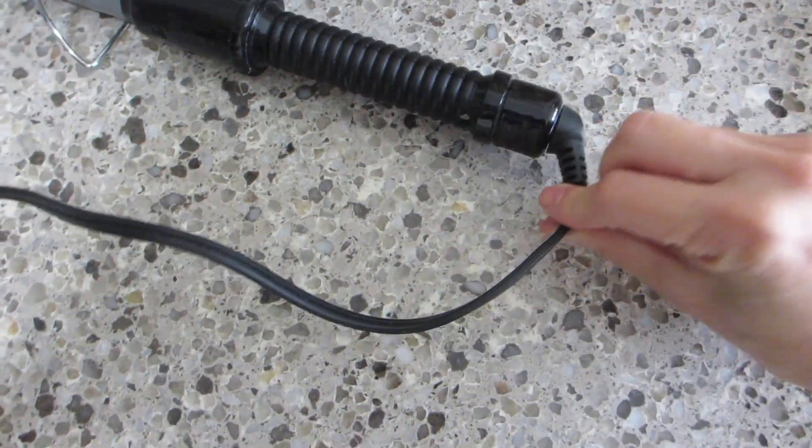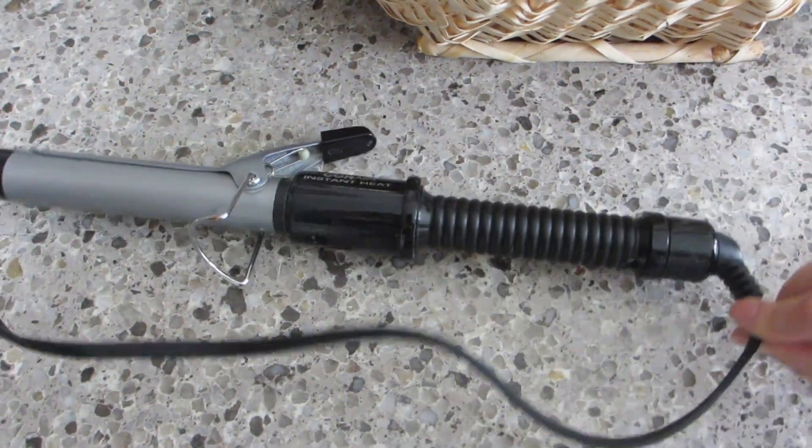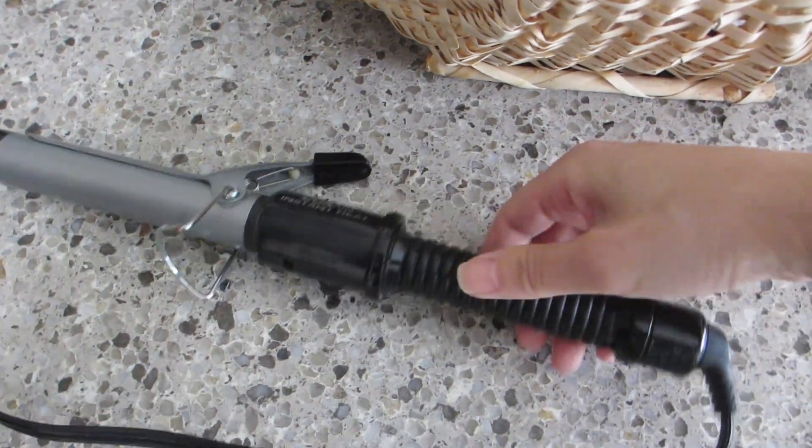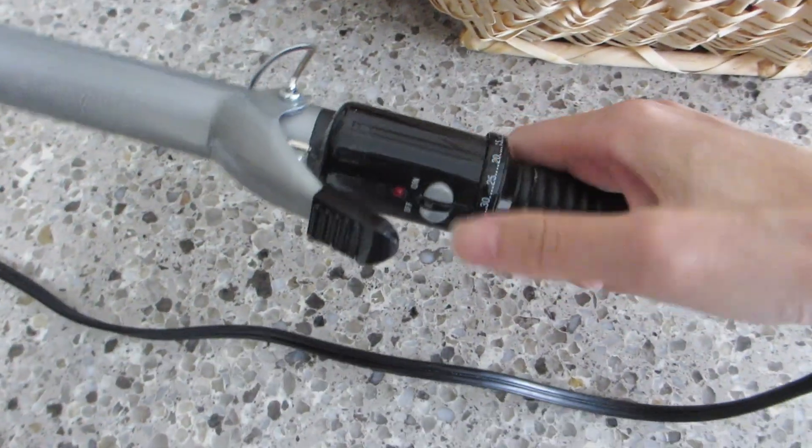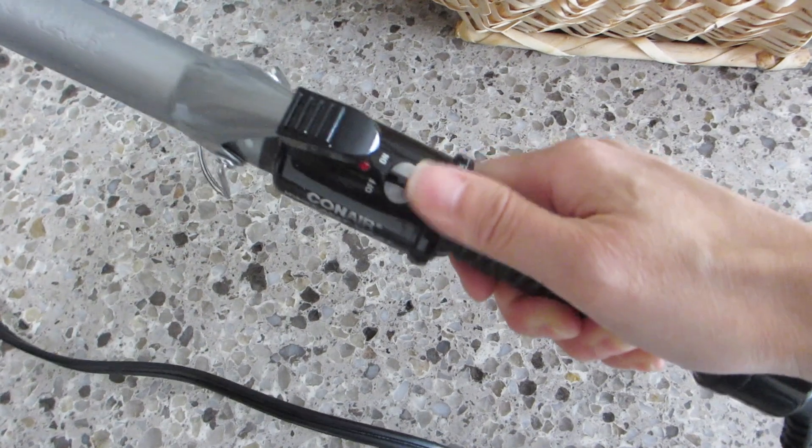This curling iron can be purchased in a variety of sizes depending if you would like a tighter curl or looser curls. If you're kind of in the middle, then you'll want to choose the 1 inch or 1.25 inch like this one.